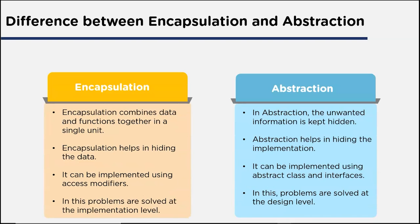Encapsulation and abstraction are similar in some ways but differ in key aspects. Encapsulation combines data and functions together in a single unit, whereas abstraction keeps unwanted information hidden. Encapsulation hides the data; abstraction hides the implementation details. Encapsulation is implemented using access modifiers, while abstraction uses abstract classes and interfaces. In encapsulation, problems are solved at the implementation level; in abstraction, at the design level.